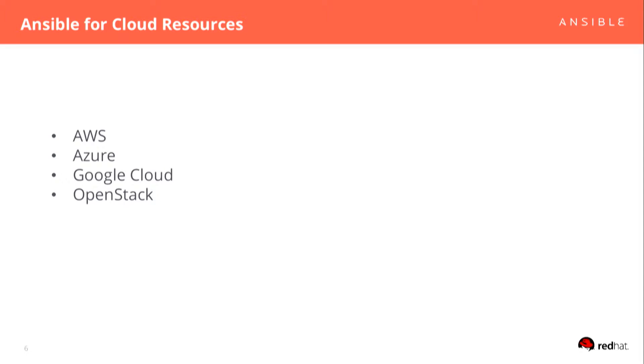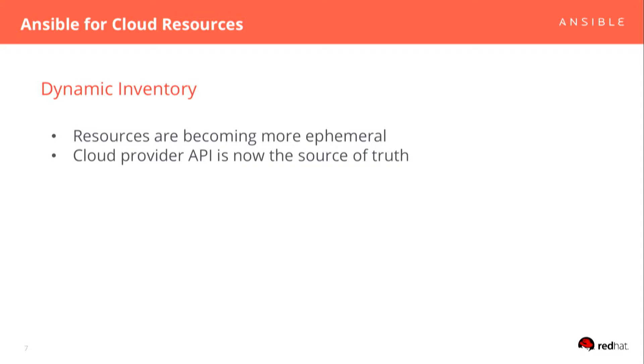We support every major cloud provider and a lot of non-major ones — whether that's hosted OpenStack or others, in your data center or with a hosting provider — and we have modules for resources in all of these. A useful tip is using dynamic inventory with third-party providers. If you have AWS, which already knows everything about your infrastructure, you tell Ansible your AWS credentials and what regions you're in, and Ansible can go to the cloud provider — which is basically your source of truth — and use dynamic inventories for GCP, Azure, AWS, VMware, wherever you're running compute.